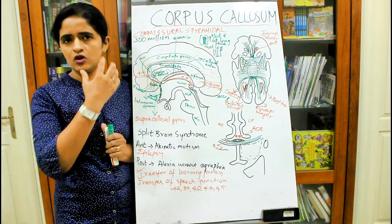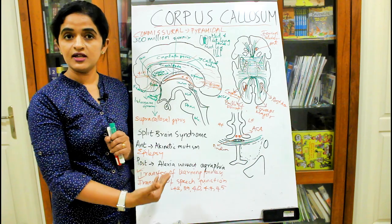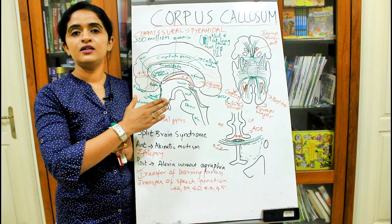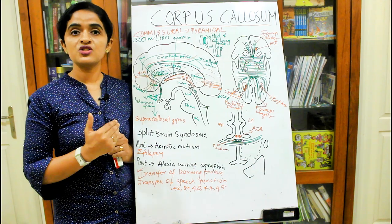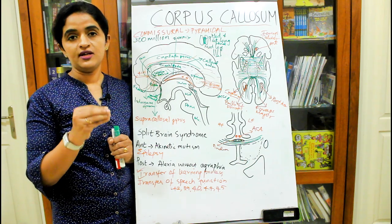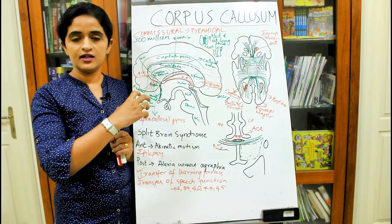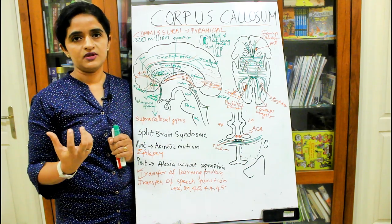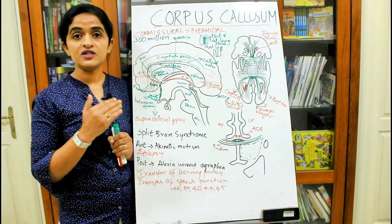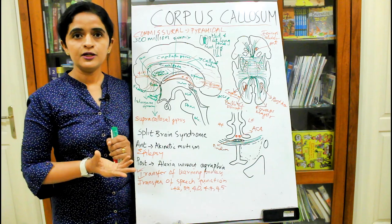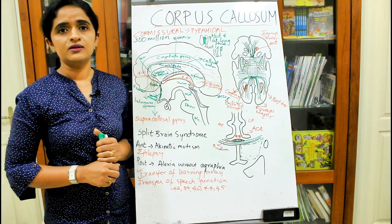Suppose you get a lesion in the dominant hemisphere before roughly six to eight years of age. In that case, the functional areas of speech will be transferred from the dominant hemisphere to the non-dominant hemisphere through the corpus callosum. The child won't suffer much from speech problems. However, if the lesion occurs in an adult brain, this transfer won't happen.